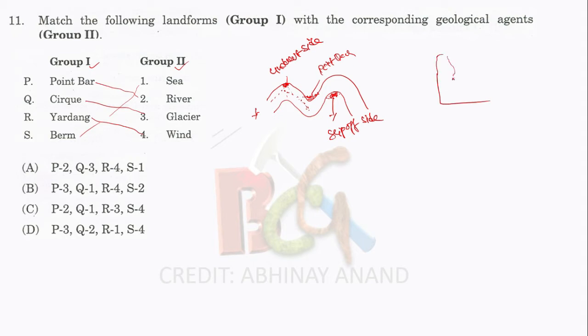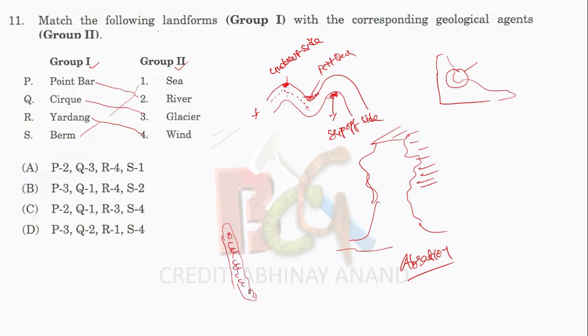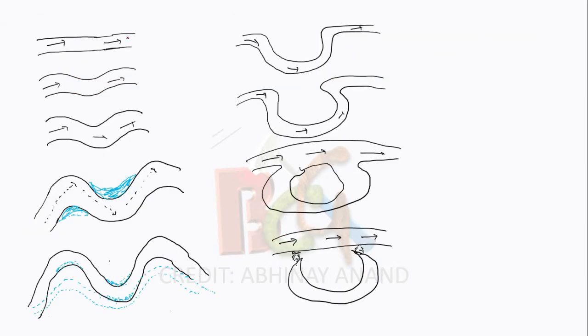Cirque is a circular hollow shape on the surface of a glacier valley formed due to abrasion. Yardang is formed by wind erosion. Berm is a depositional feature where quartz and sand particles are deposited by waves at high tide of the sea. It is also known as sea terraces.